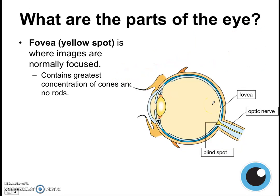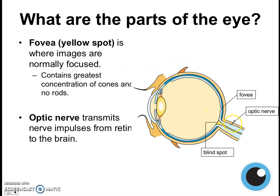Next, we also have the optic nerve, which transmits nerve impulses from the retina to the brain. All the photoreceptors will detect light and then produce nerve impulses, and those nerve impulses will be transmitted from the eye to the brain through the optic nerve.